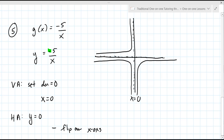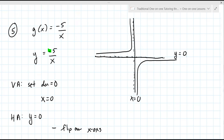Before, it was bottom left, so it flips to top left. If I'm grading your assignment as your instructor, I'm looking for: is it in the right quadrant? Is the vertical asymptote and the horizontal asymptote correctly labeled? That's it. I'm not looking for anything more complicated than that.